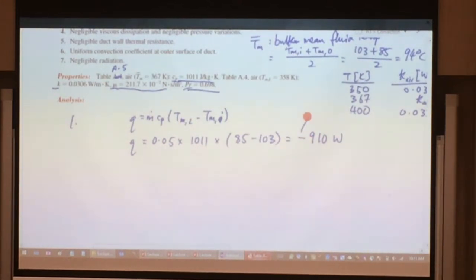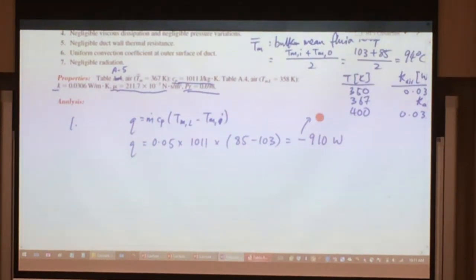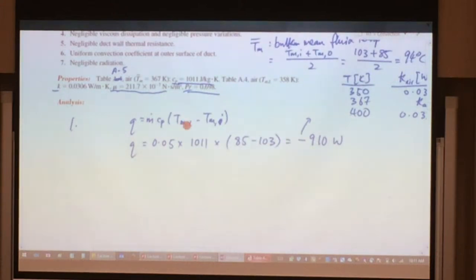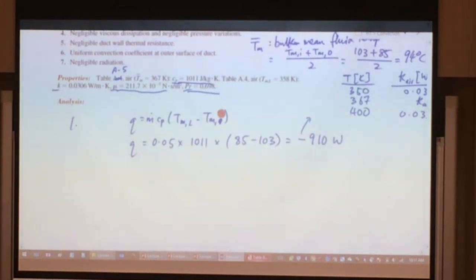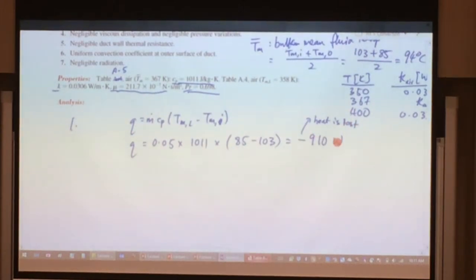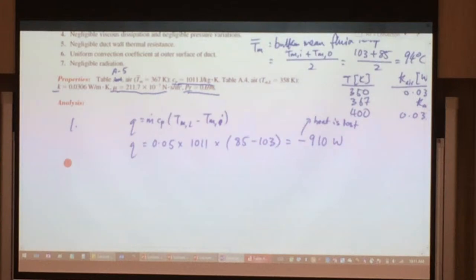Now this minus here, what it means is that heat is transferring out because we take the endpoint minus the initial point. Your endpoint actually will be at a lower temperature, and your initial point will be at a higher temperature. So that means heat is lost. That's why there's a minus sign over there. That's the one for part 1.